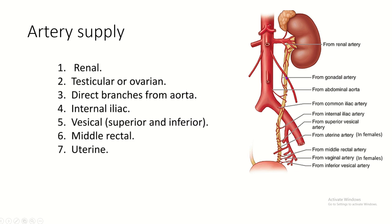The upper part is supplied by branches from the renal artery, and also from the gonadal artery, because the gonadal artery crosses in front of the ureter. It also receives direct blood supply from the abdominal aorta and from the common iliac artery at the second constriction. It receives supply from the internal iliac artery and from both branches — superior and inferior vesical arteries — of the urinary bladder. In females, it also receives additional supply from the middle rectal artery.